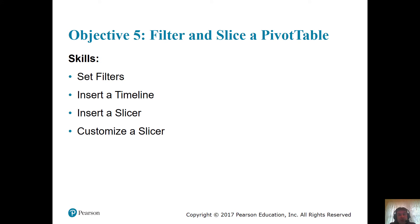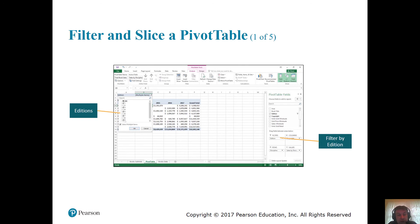Objective 5: Filter and slice — basically just showing what you want to see. Skills include inserting a timeline, inserting a slicer, and customizing a slicer. In this case we're looking at editions: fourth edition, first edition, second edition. On the right-hand side in the pivot table fields, you filter by edition. You select or deselect accordingly using checkboxes.